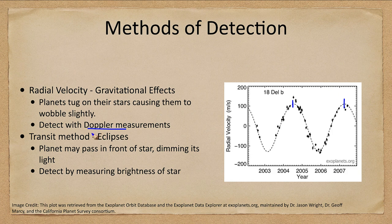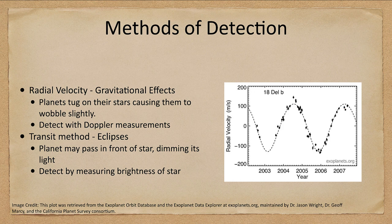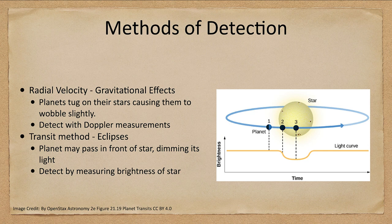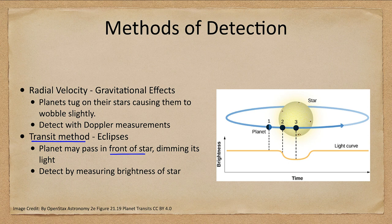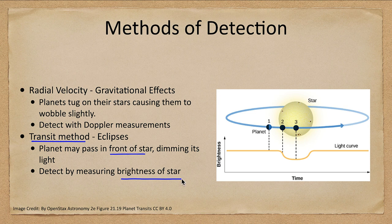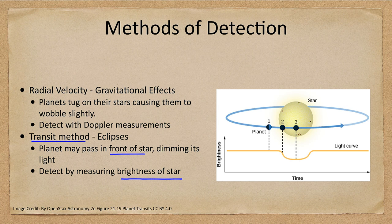We can also use what we call the transit method which is an eclipse of the star. The transit method or an eclipse occurs when a planet passes in front of the star. This occurs only if everything is lined up just right so that the planet passes in front. We can measure the brightness of the star and watch how that dims over time.